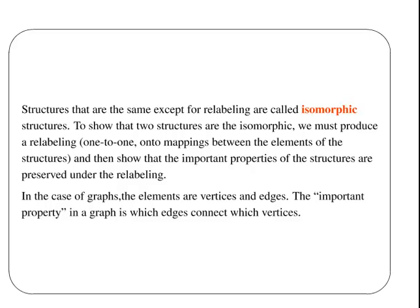ISO essentially gives is the same as, and morphic means shape. So the same shape. To show that two structures are isomorphic, we must produce a relabeling, as in show the correspondence like we have done there previously. One to one onto mappings between the elements of the structures, and then show that the important properties of the structures are preserved under labeling. I will just give you a quick example of that. Graphs, paths, loops, cycles, and so on. That is what I mean by properties.